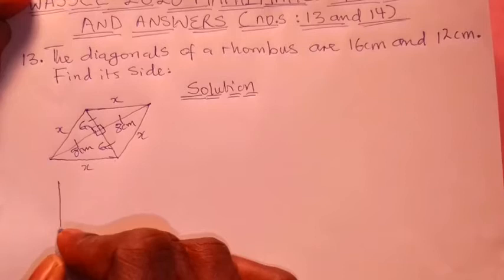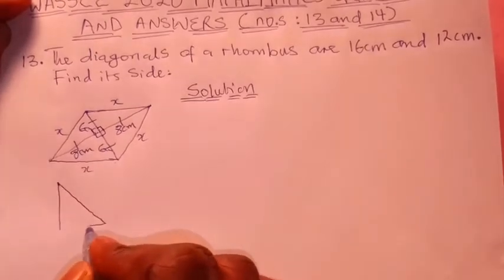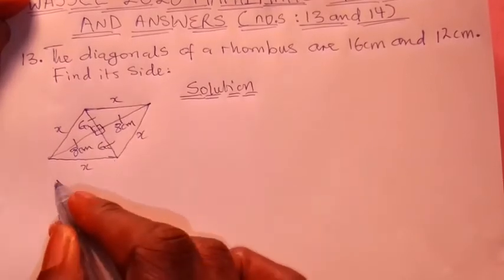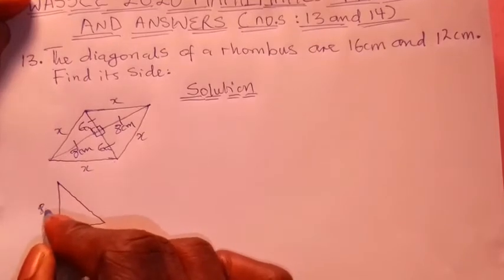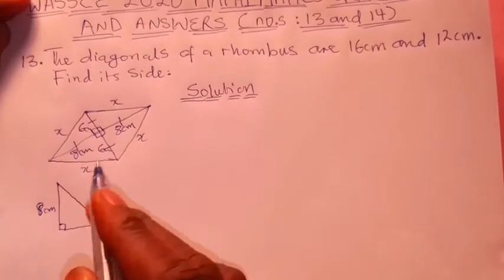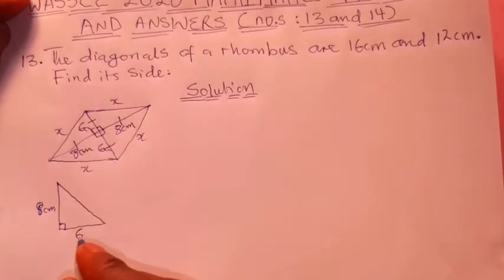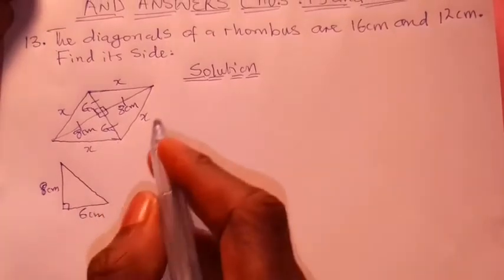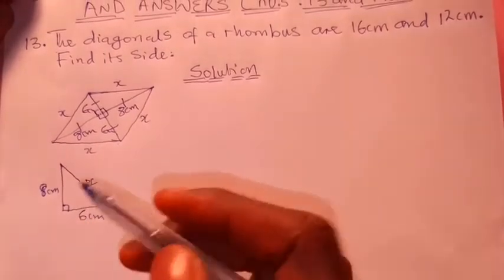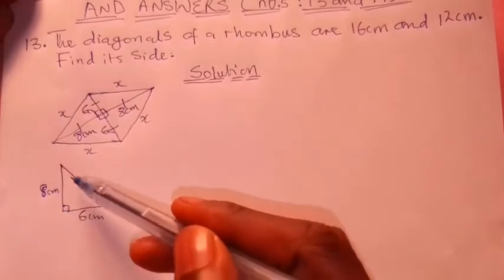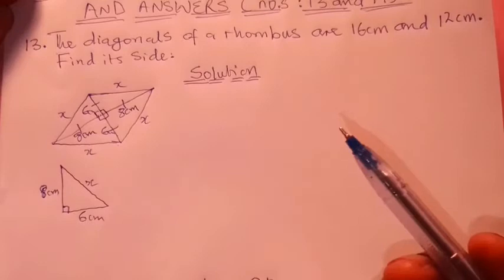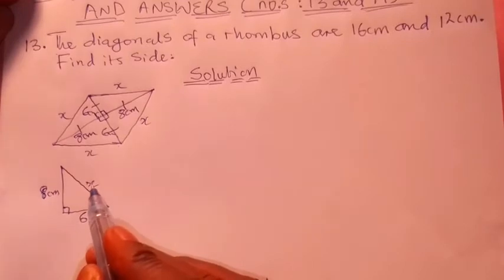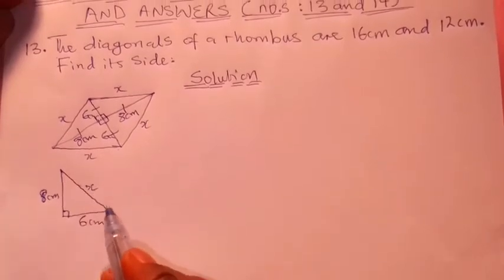Taking the right triangle, we place the half of the longer diagonal vertically: 8 cm. The other part is 6 cm horizontally. We are looking for the side X, which is the hypotenuse of this right triangle — the side directly opposite the 90-degree angle and the longest of the three sides. We'll use Pythagoras' theorem to solve this.